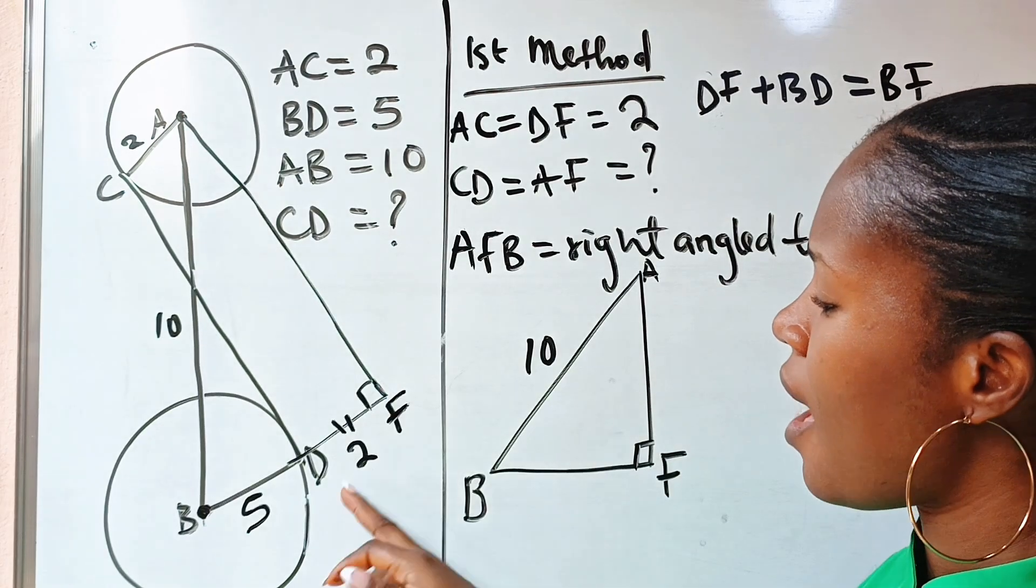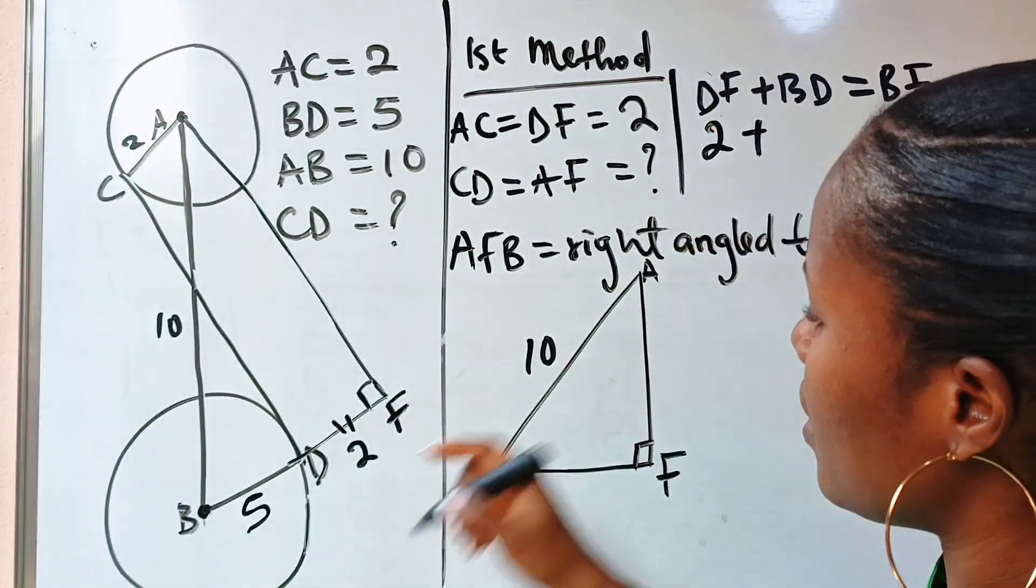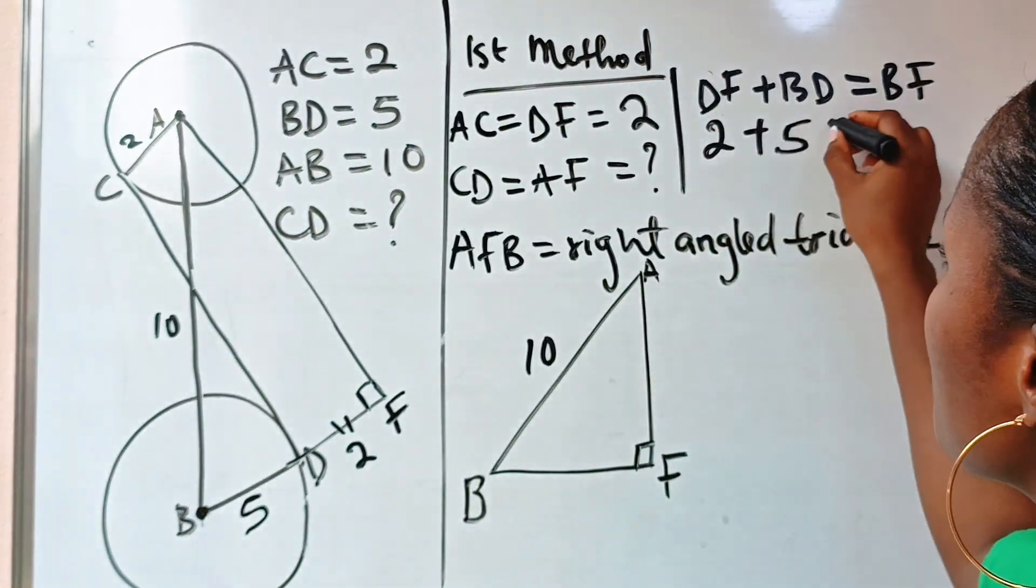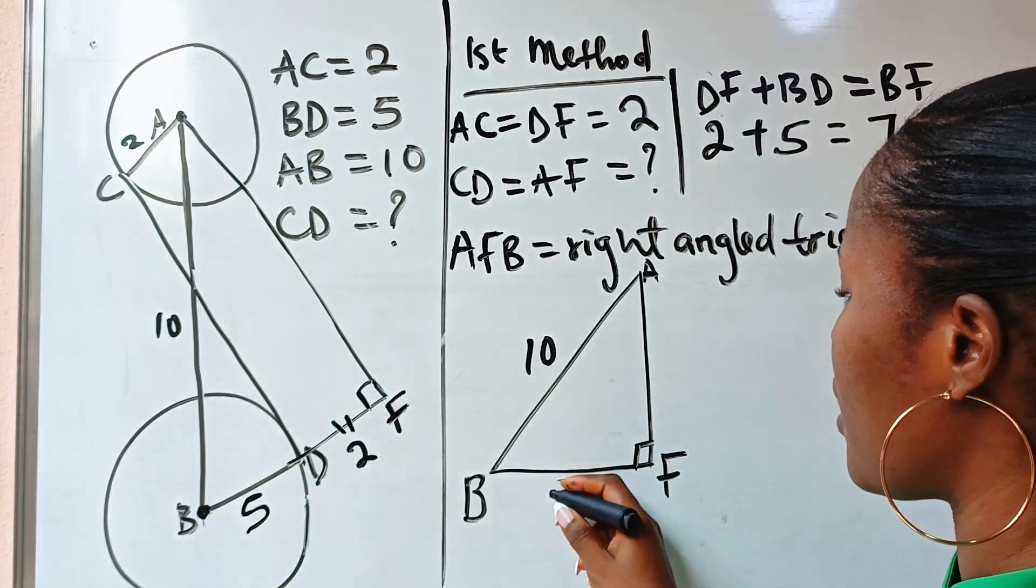Now our DF is 2, our BD is 5, so it simply means that BF is 7. So I'm going to write 7 here.